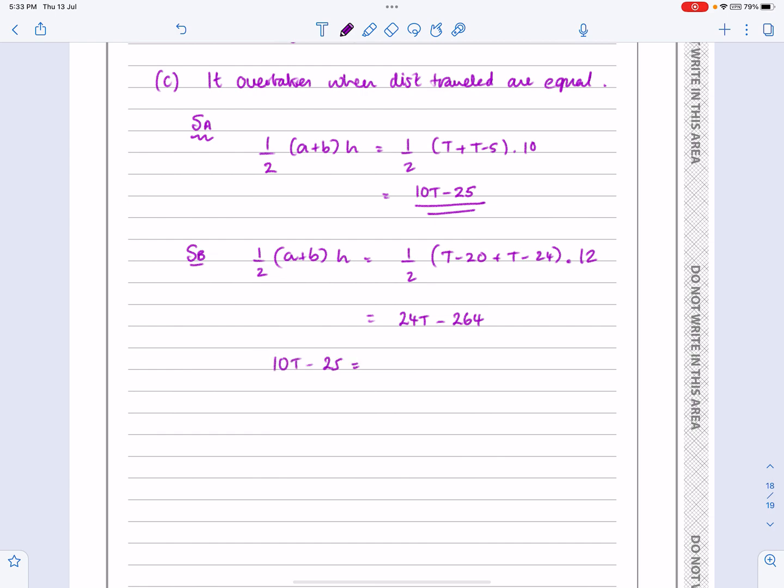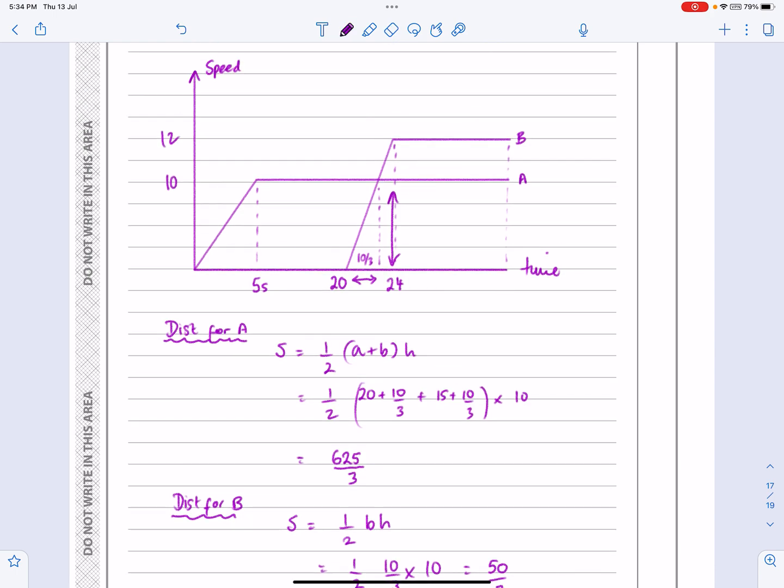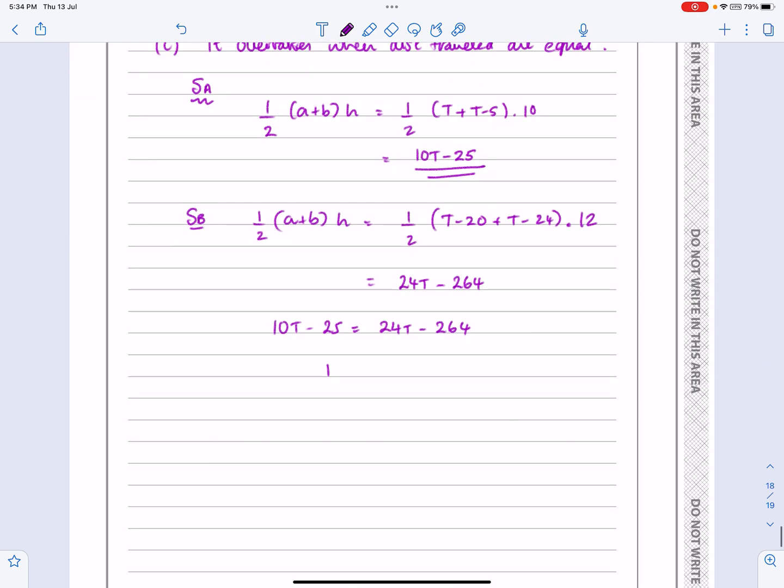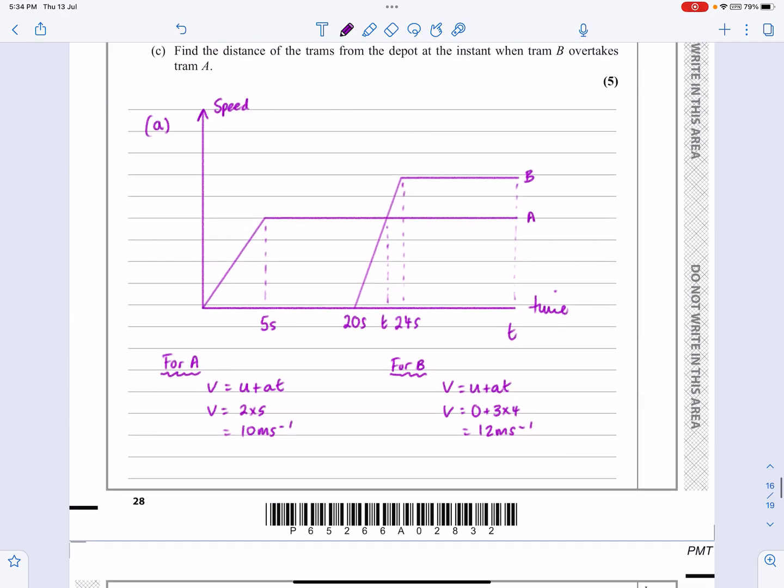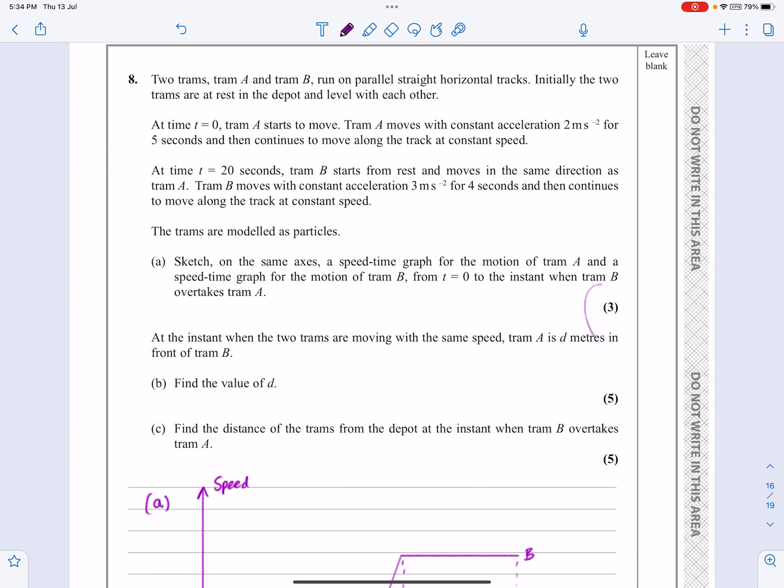10T minus 25 is equal to 24T minus 264 and work out what T is. T works out to be equal to 119.5 seconds. Make sure you answer the question. The question didn't say what time was it, it actually said what was the distance. So the distance traveled, I'm going to use 10T minus 25 is 10 times 119.5 minus 25. And that works out to be 1170 meters for that final answer. So long video, long question, but certainly one that's gettable if you break it down into the three bits. And you're aware of all those little tricks that they do to try and get that question. Okay, hopefully that makes sense.